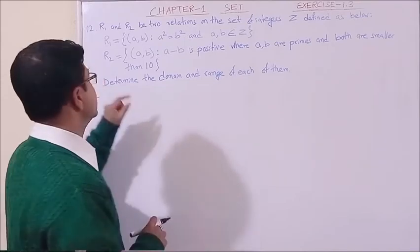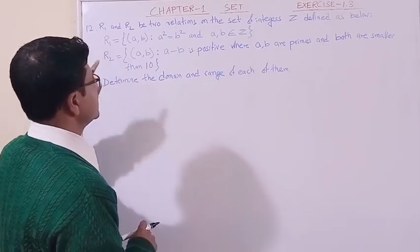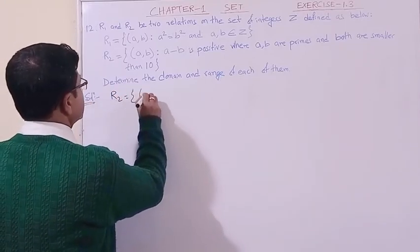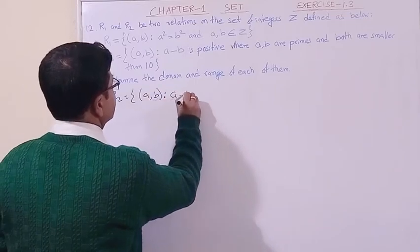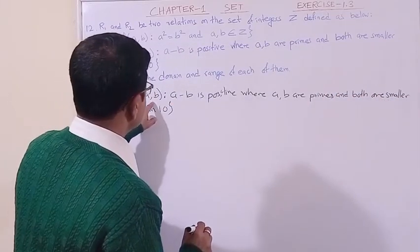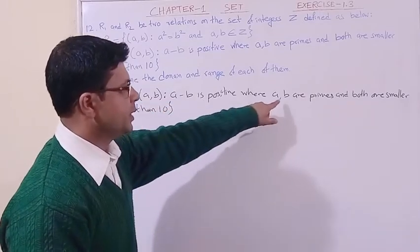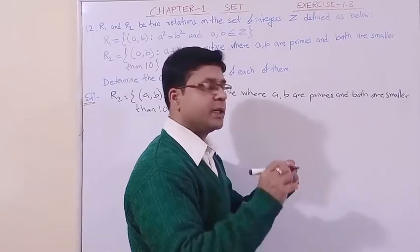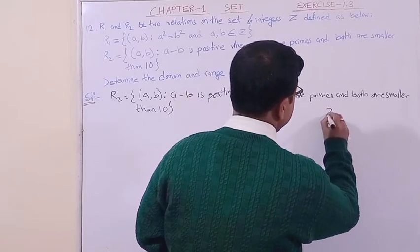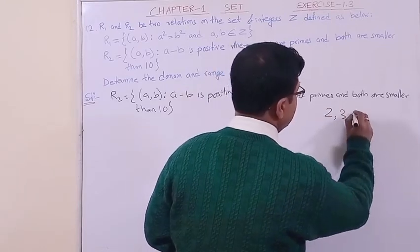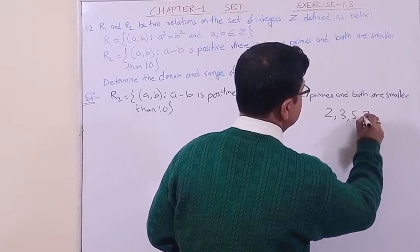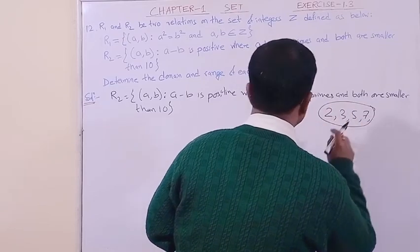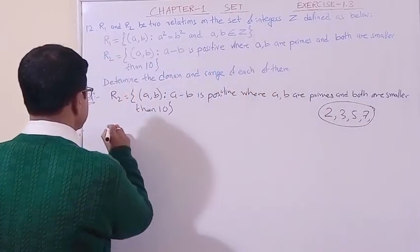Now let us find R2. In set-builder notation: R2 = {(a, b) : a - b > 0, where a, b are prime numbers less than 10}. Which primes are smaller than 10? Note that 1 is not a prime number; prime numbers start from 2. So the primes less than 10 are: 2, 3, 5, and 7.